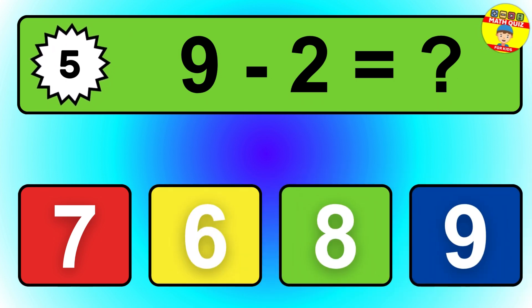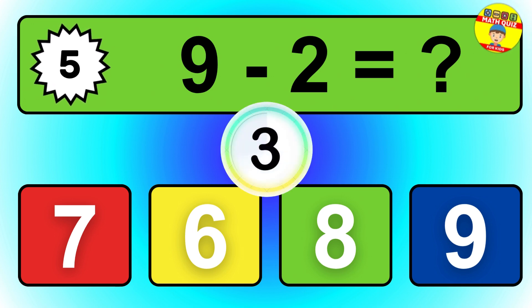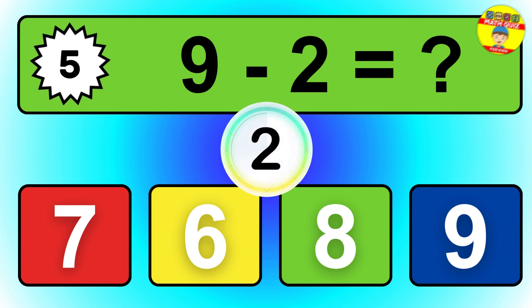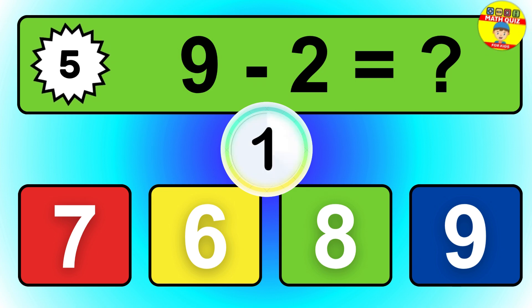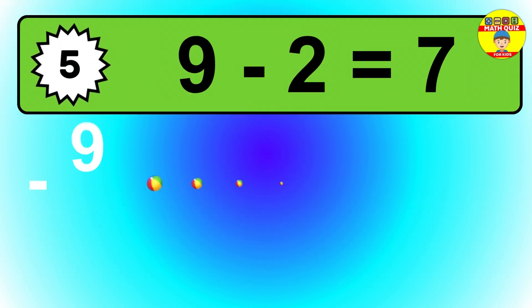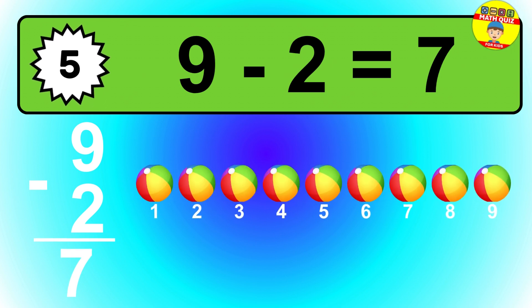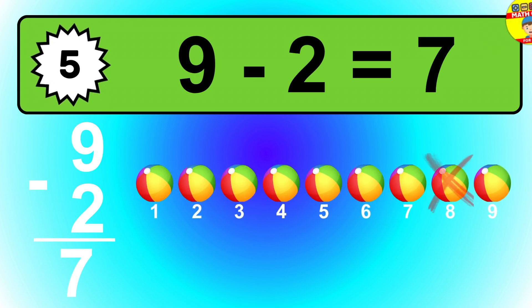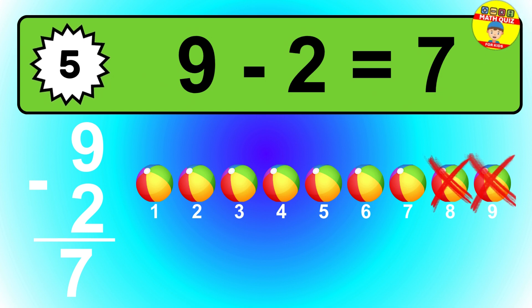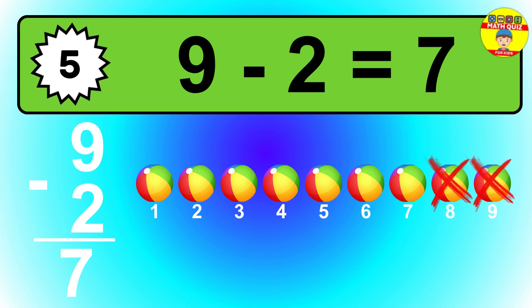Question 5. 9 minus 2 equals what? So the answer is 9 minus 2 is 7. Let's count it: 1, 2, 3, 4, 5, 6, 7.